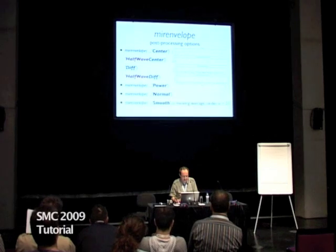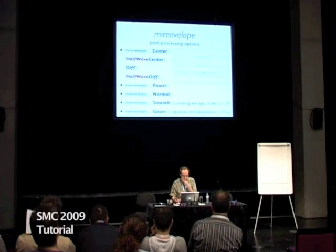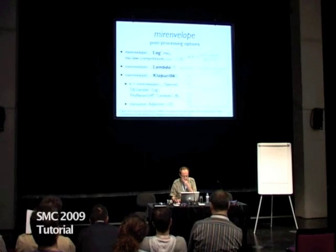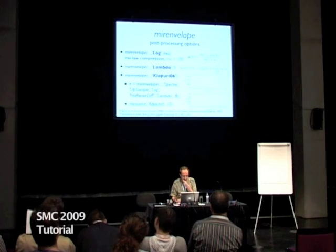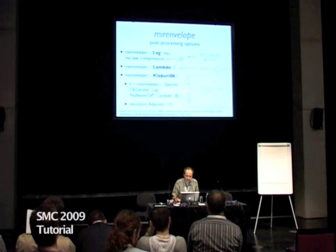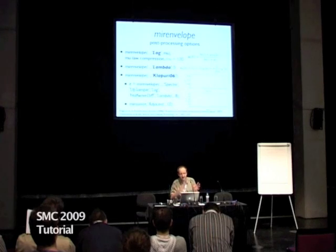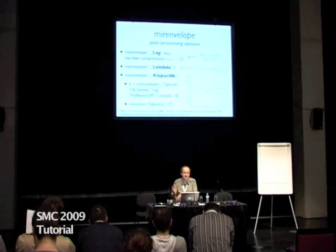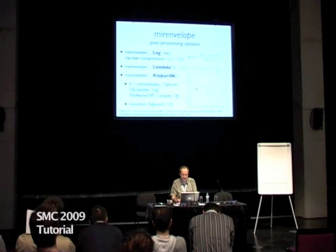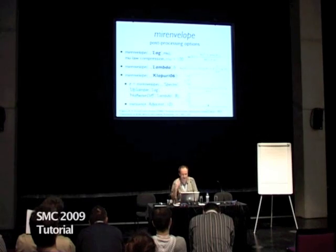Additional operations include power transformation, normalization, averaging, and filtering. We have also implemented part of the Klapuri model used for beat estimation, with logarithm compression and a summation of the signal of the envelope and the differentiation. So basically, from a classical envelope, we obtain something that is closer to the signal in the auditory neural system.